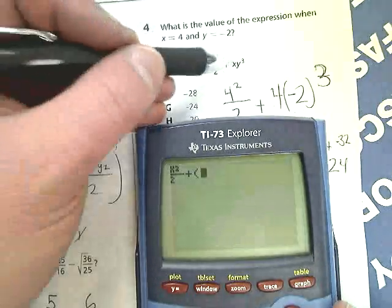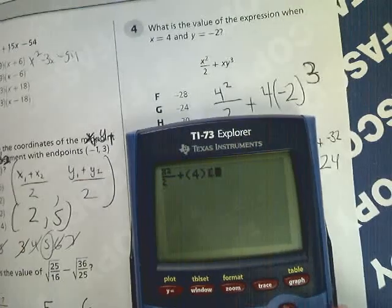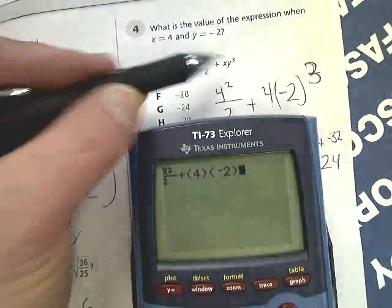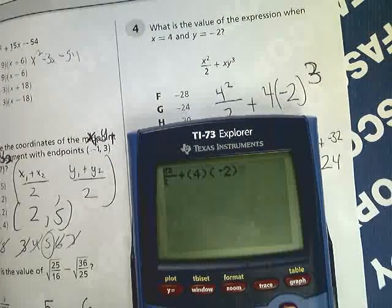I always try to put the things touching each other in parenthesis just to sort of remind the calculator that it is a multiply situation. Make sure you put that third outside the parenthesis.